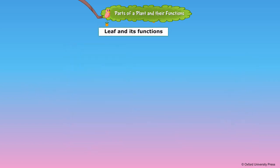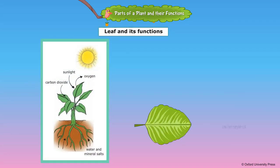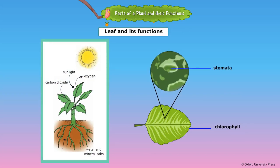Leaves are the green parts of a plant. A green substance called chlorophyll found in the green leaves uses sunlight and prepares food for the plant. The plants breathe through the tiny pores called stomata present in the leaves.